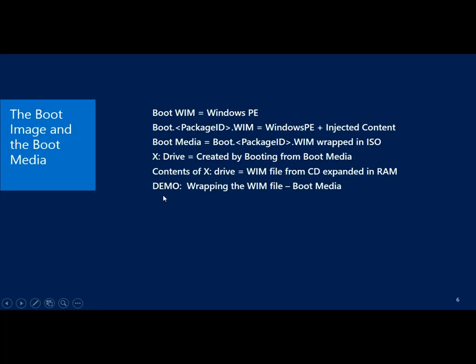So just to go through it again: the boot WIM does equal Windows PE — they are the same, those two terms are interchangeable. The boot WIM is simply Windows PE modified. The boot.packageid.wim is Windows PE plus the injected content specific to Configuration Manager. Boot media then is the boot.packageid.wim wrapped up in an ISO. The boot.wim file inside the ISO is not the same name but it's the same content. The X drive is created by booting from the boot media — the binaries know how to create that X drive and expand the WIM onto it. The contents of the X drive are exactly the contents of boot.packageid.wim loaded into RAM.